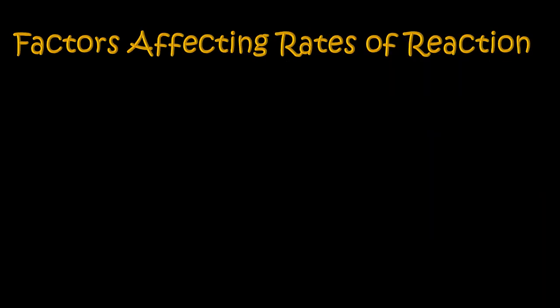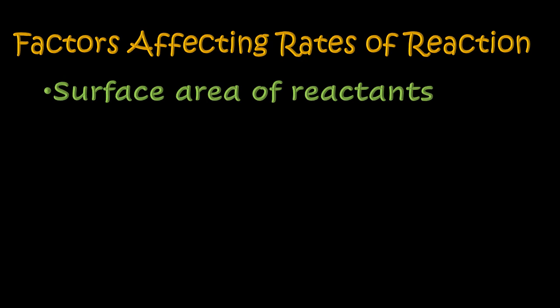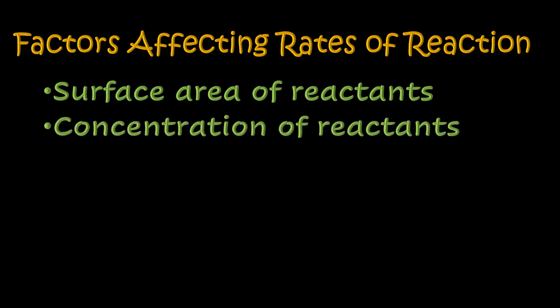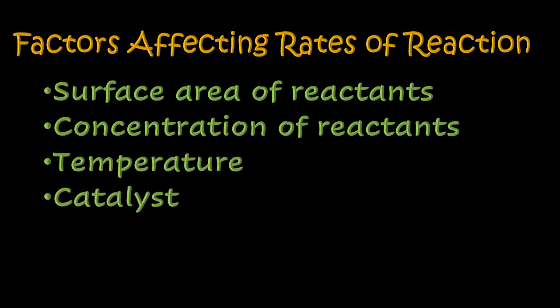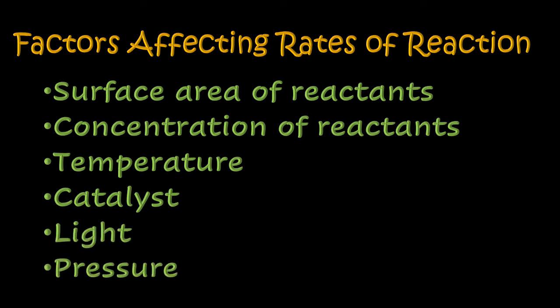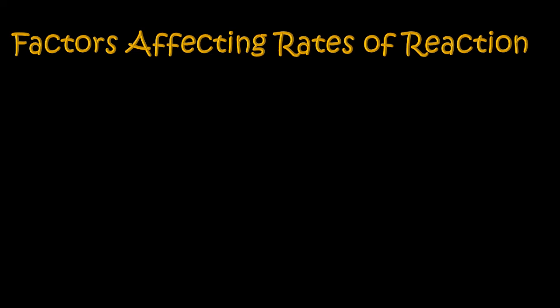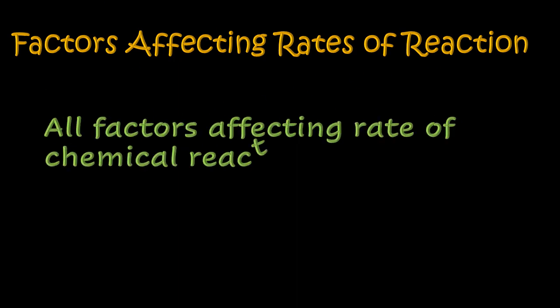Let us consider the factors that affect the rate of a chemical reaction. The first is the surface area of reactant particles; the second is the concentration of reactant particles; the third is temperature; the fourth is the effect of a catalyst; the fifth is light; and the sixth and last is pressure. There are many other factors, but these are the ones we shall consider in this topic. All these factors must be considered in the light of the collision theory.